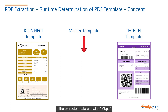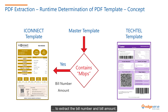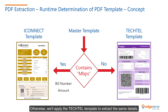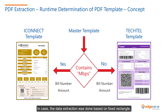If the extracted data contains mbps, we will subsequently apply the iConnect template to extract the bill number and bill amount. Otherwise, we will apply the Tectel template to extract the same details. The approach of creating the master template could also have been done using the Tectel bill. In case the data extraction was done based on fixed rectangle, it wouldn't require finding a common keyword.